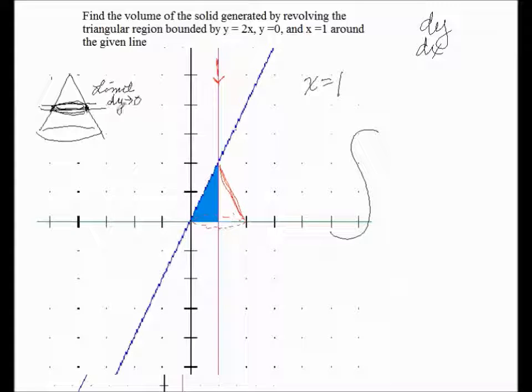So in this case we're trying to find a representative slice that has dy thickness. So once we decide that the thickness is dy, then we know that the integrand here has to be in terms of y.